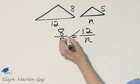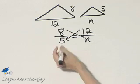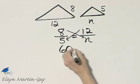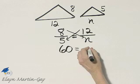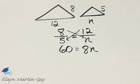So how do we solve? We equate cross products. 5 times 12, that's 60, is equal to 8 times N, and that's 8N.